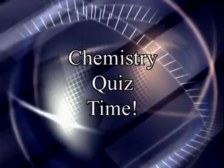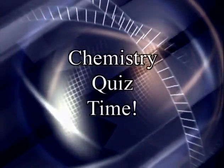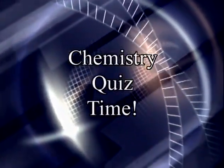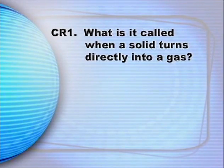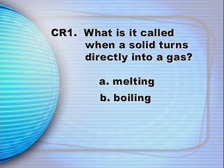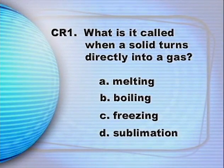Now let's take our chemistry quiz — write the answers to each question in your notes. Your local teacher will go over the answers with you after I say goodbye. Cumulative review question number one: What is it called when a solid turns directly into a gas? A. Melting. B. Boiling. C. Freezing. D. Sublimation.